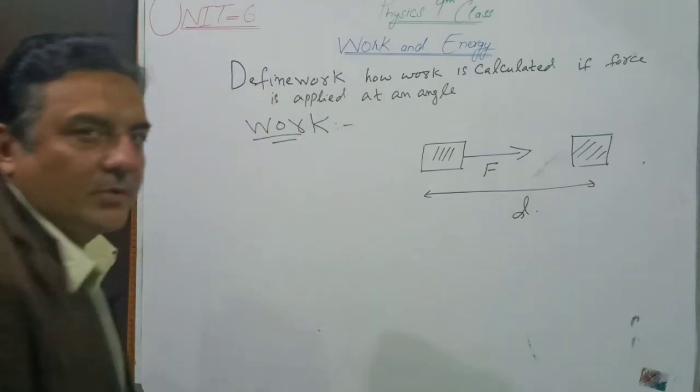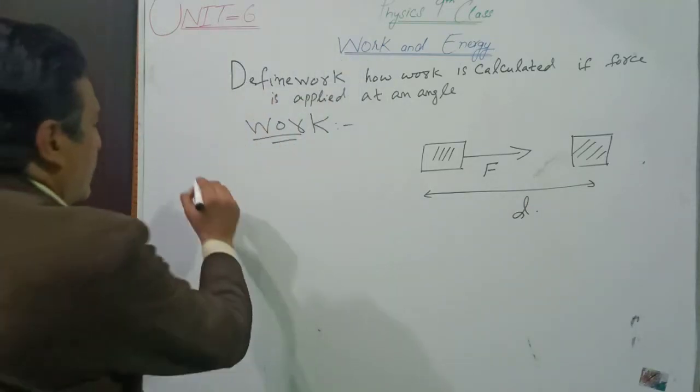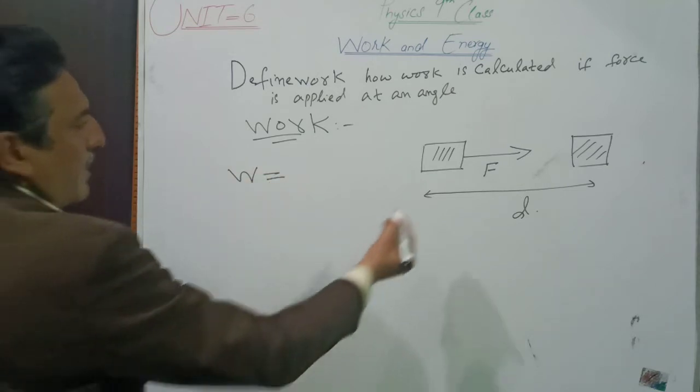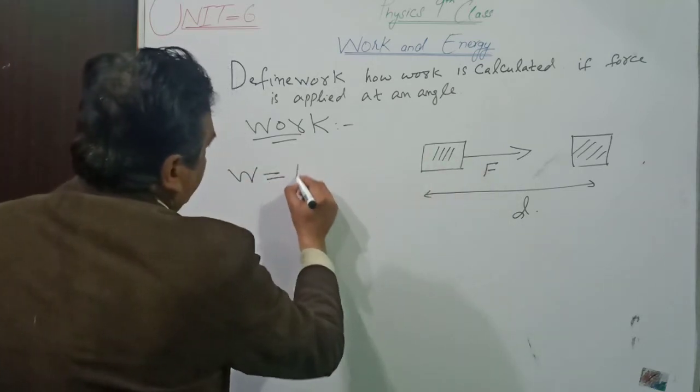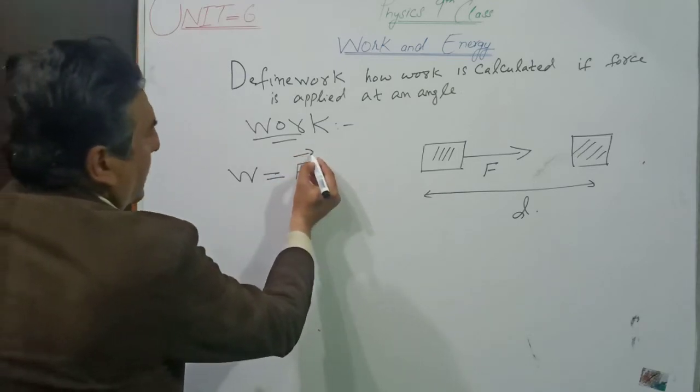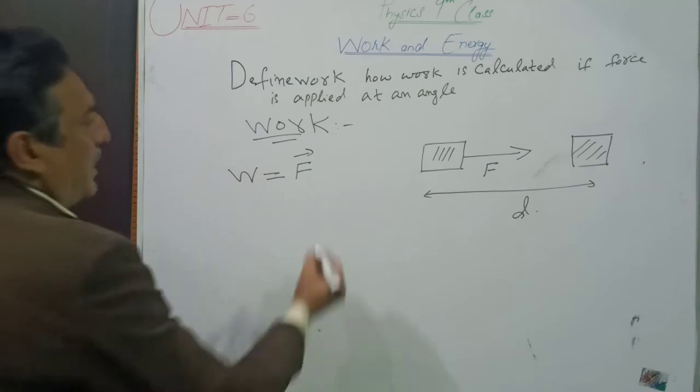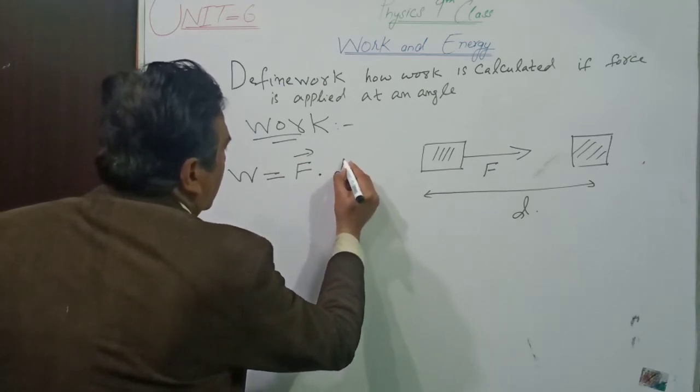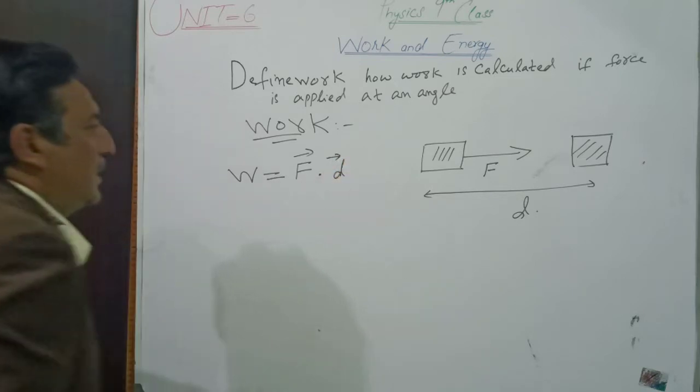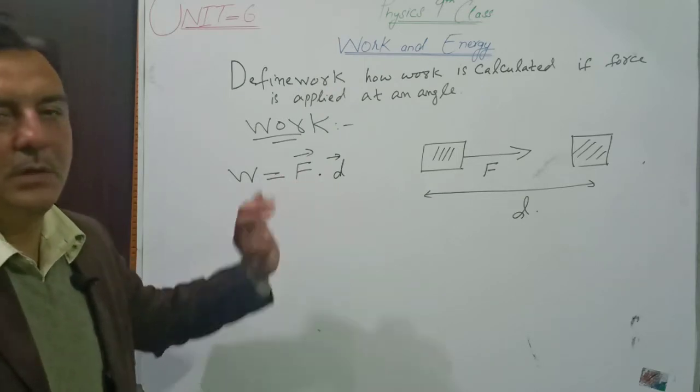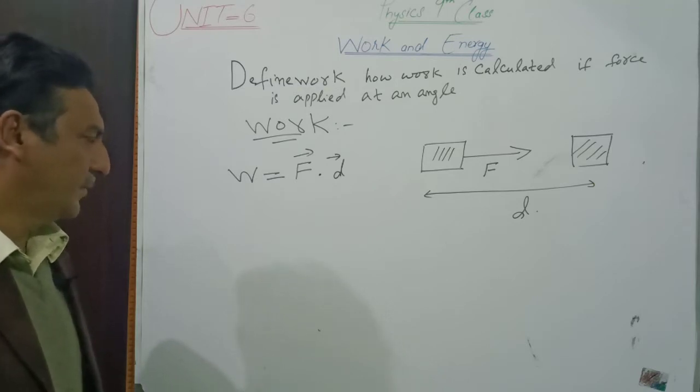Then how much work is done? Work is done when force is applied and body covers some displacement. It means that work is the product of force and displacement. This is work.